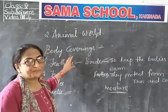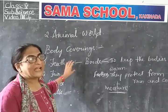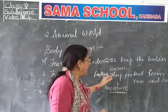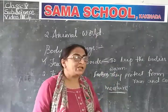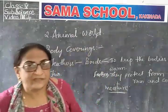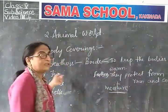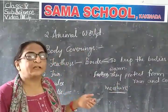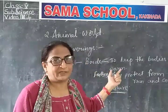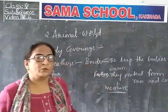So birds have body coverings as feathers. These feathers keep the bodies warm and they also protect from rain and cold. At the same time, these feathers protect them from moisture. This is about feathers — one of the body coverings of animals to suit their habitat.